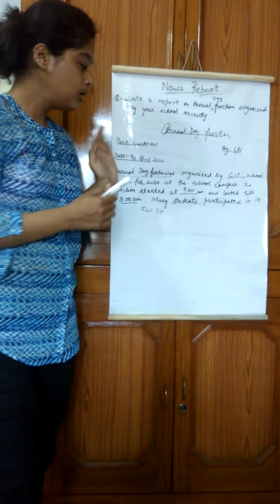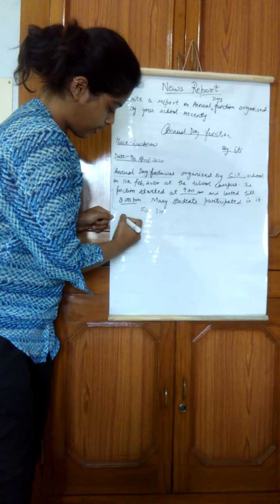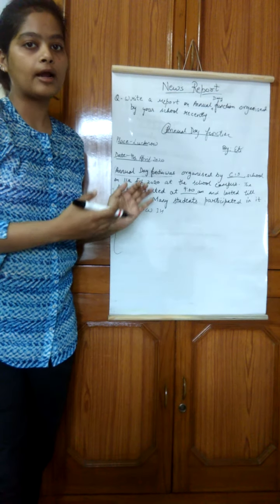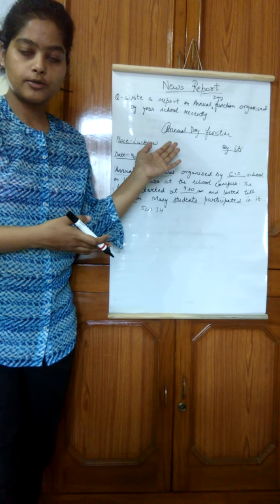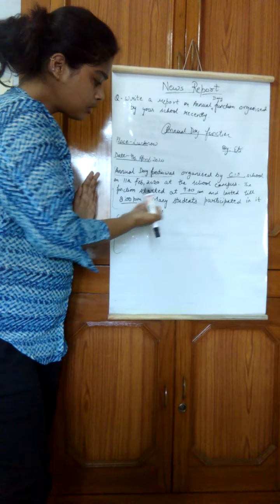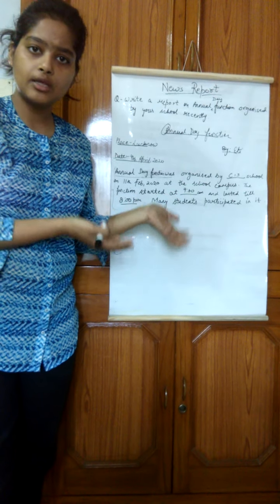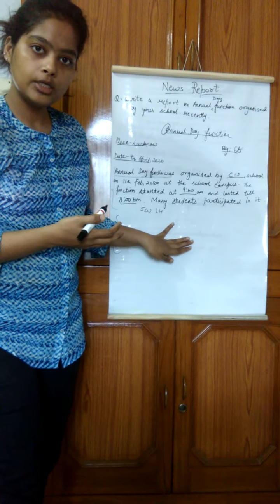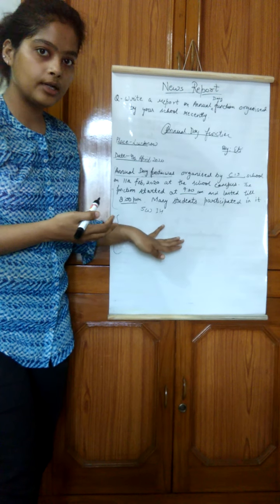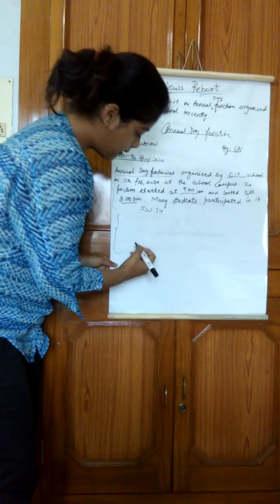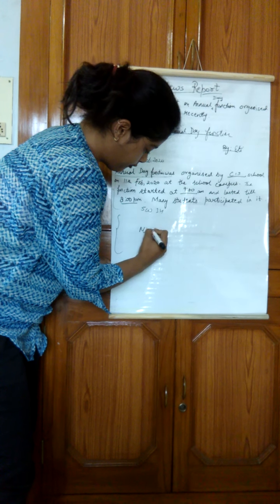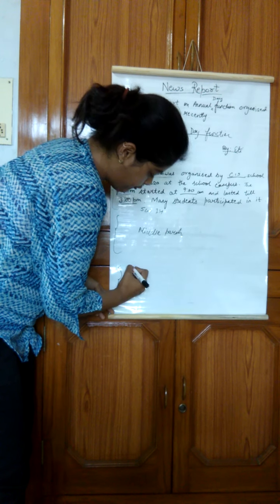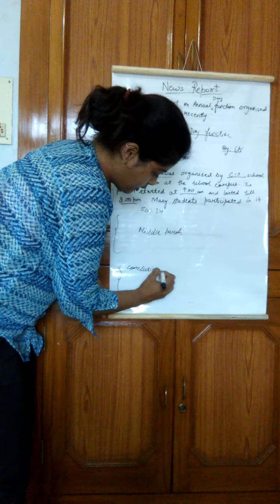Now comes the second paragraph. In the second paragraph, you are going to write the details about the various activities which happened in the event — like dancing programs, singing programs, skits, and so on. Write everything in three to four lines and mention the details of the function. This will be the middle paragraph.